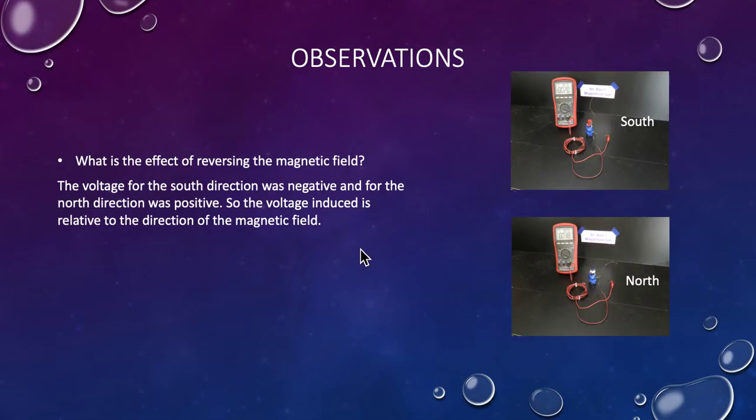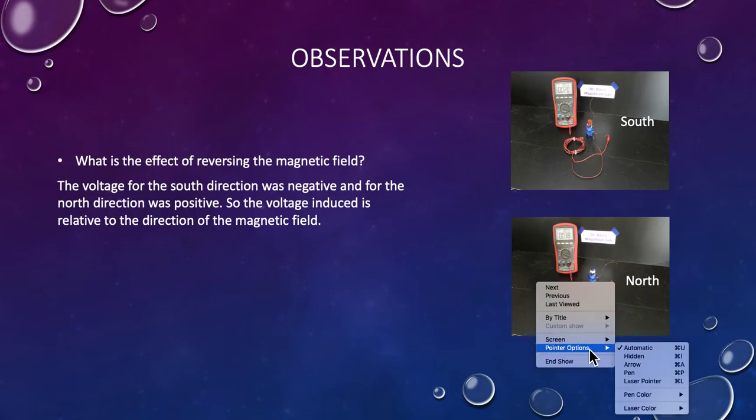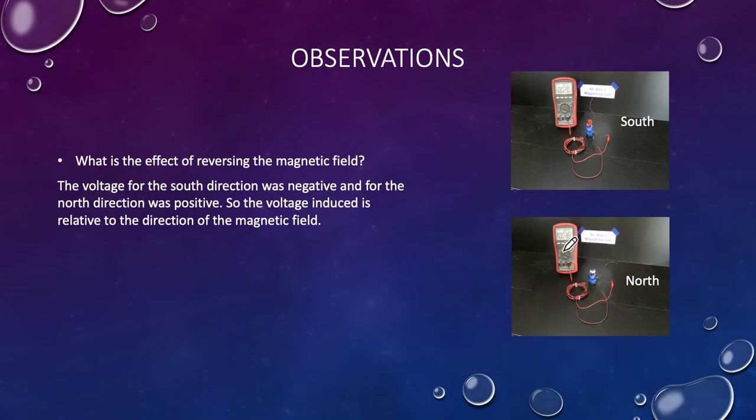What is the effect of reversing the magnetic field? If you remember, we had an example where we had a south being plunged in first and then a north being plunged in first, and clearly you can see on the meter we've got a minus when we were putting the south in first and we got a plus when we were putting the north in. Again, the meter doesn't actually say plus because it just assumes plus. So the voltage for the south direction was negative and for the north direction was positive. So the voltage induced is relative to the direction of the magnetic field.